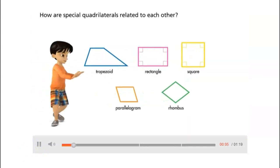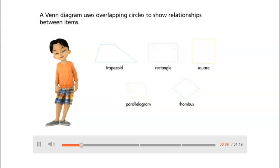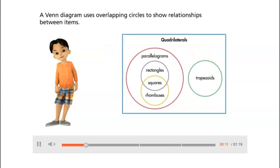How are special quadrilaterals related to each other? A Venn diagram uses overlapping circles to show relationships between items.